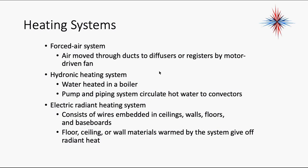With hydronic heating we also have radiant heating, where you don't see any registers or diffusers — it actually warms the floor. Electric radiant heating systems consist of wires embedded in ceilings, walls, and floors or baseboards; the floor, ceiling, or wall material is warmed by those wires and gives off radiant heat. Hot water radiant systems are extremely efficient and comfortable. Electric radiant was popular back in the 70s and 80s when power was inexpensive, but it costs more today.